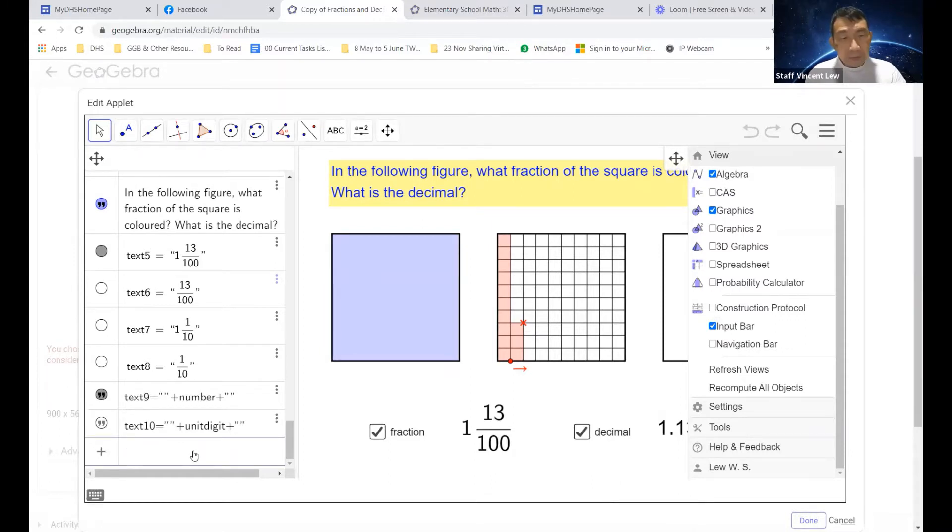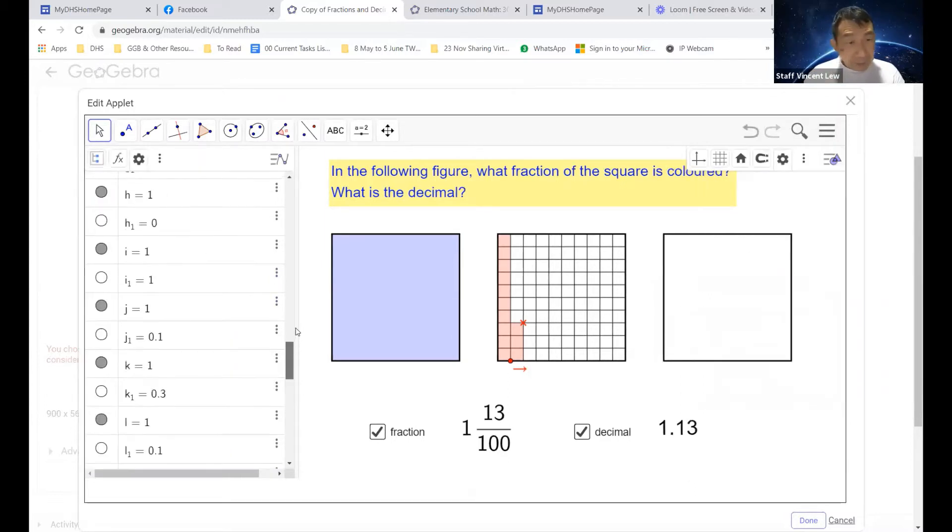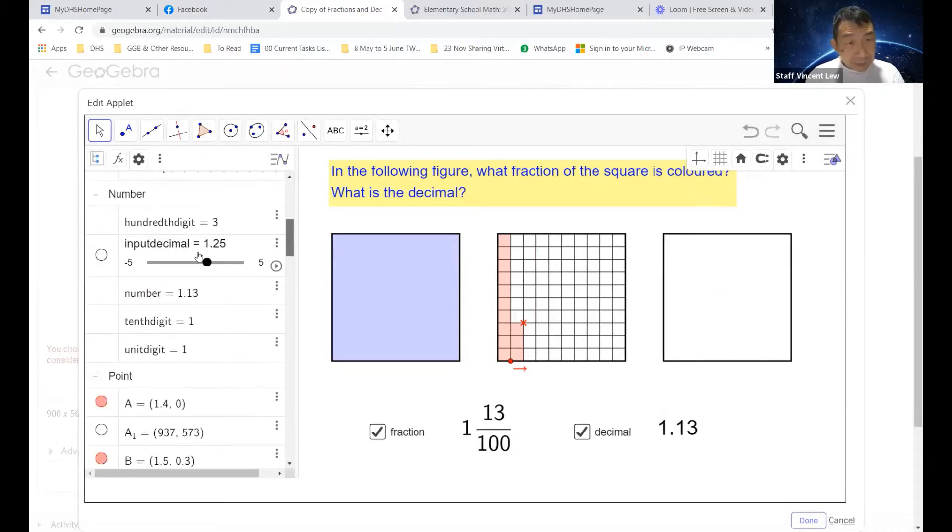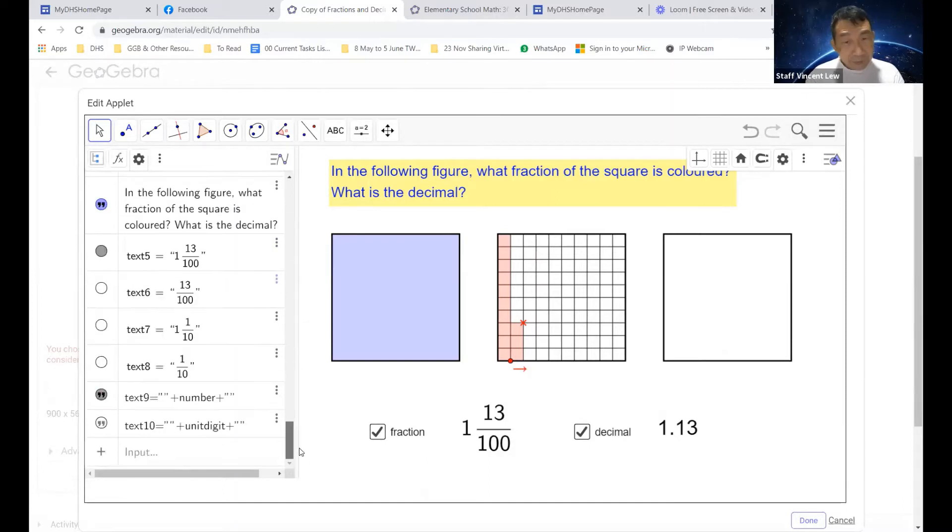Let's call it input decimal. And we are going to say it's equal to 1.25. And you notice that if you move up, the input variable is a number actually. So you can see that input decimal, the answer is 1.25.